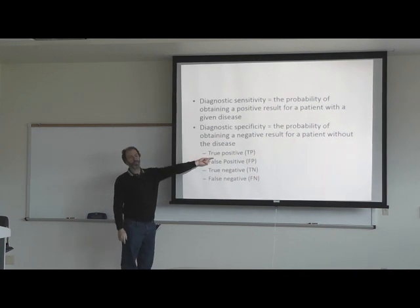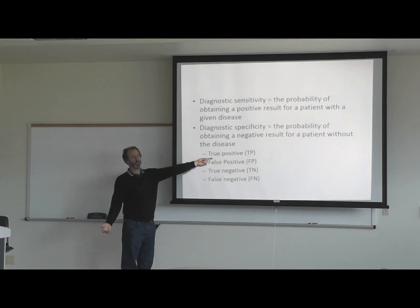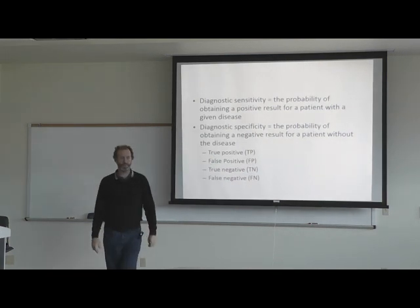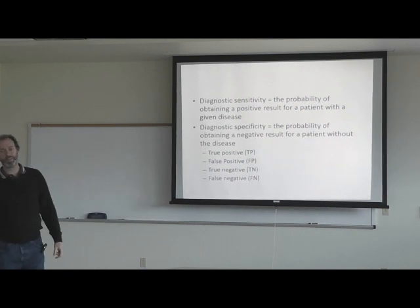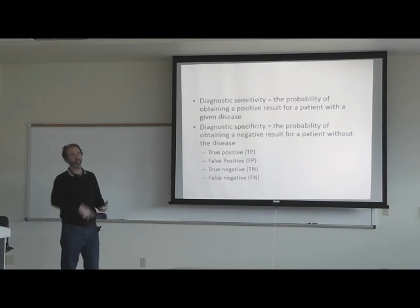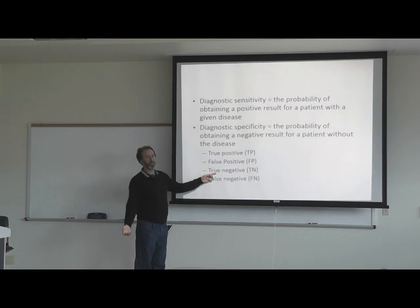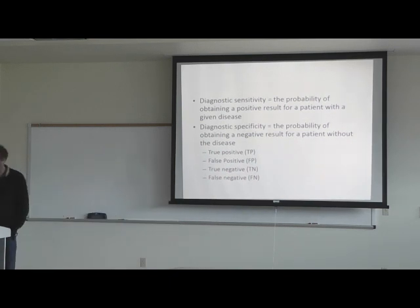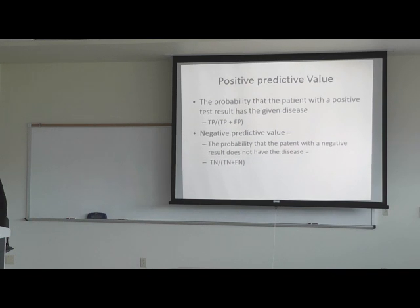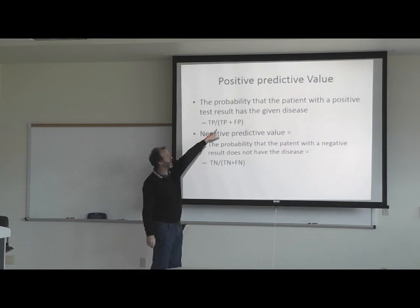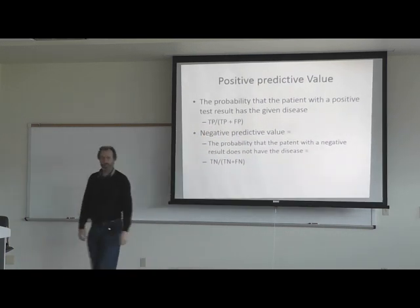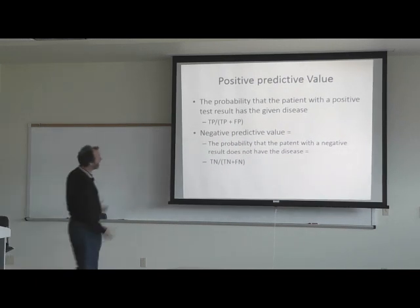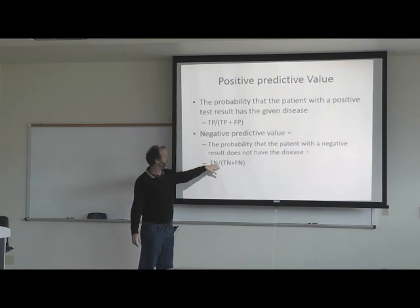What do you think a true positive is? It's a result that's positive and the person does have the disease. A false positive is when they get the diagnosis but they don't have the disease — based on the analyte concentration. True negative: the test says they don't have it and they don't. The negative predictive value is the total number of true negatives divided by all the negative results.